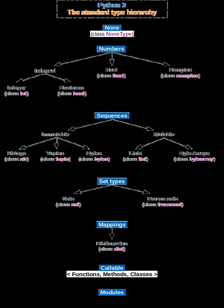Data types are used within type systems, which offer various ways of defining, implementing and using them. Different type systems ensure varying degrees of type safety.